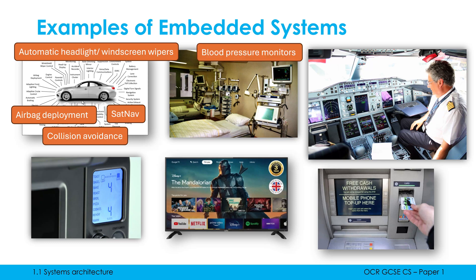In medicine there are loads of technical examples, but generally anything which monitors your body — like a blood pressure sensor — will be an embedded system. A defibrillator relating to the heart would be an embedded system, as will computers which deliver medicine or vitamins via injections. In aviation, autopilot is a well-known example of an embedded system.